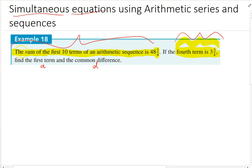So let's use the first bit here. The sum is going to be equal to n over 2 bracket 2a plus n minus 1 times d. And I know that the sum is 48 and 3 quarters. I hate using mixed numbers but we'll see how we go. The first 10 terms, 10 over 2. 2a plus n minus 1. So there's 10 terms, so that's 9 plus 9d.